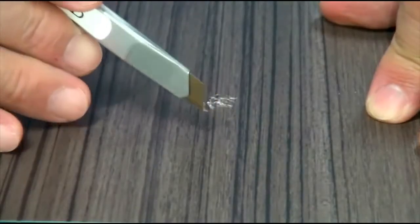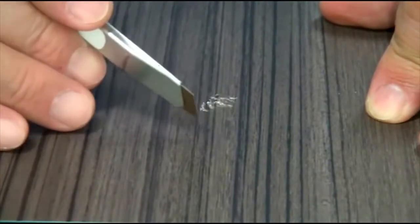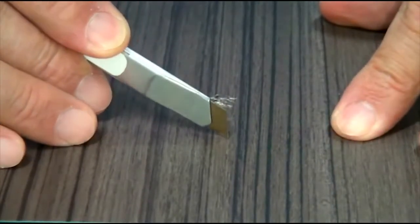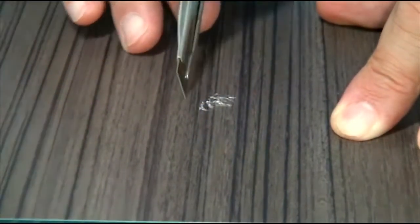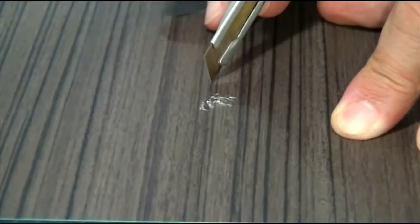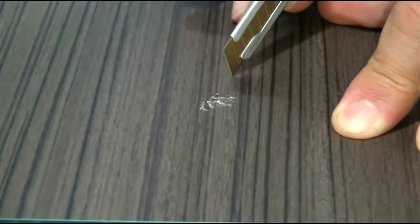Using a clean, sharp blade, cut around the damaged film so there is at least 1 quarter inch margin of undamaged film around it. Cut a simple shape that will be easy to duplicate later in this procedure.